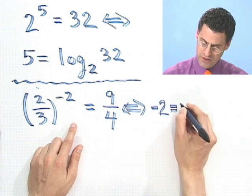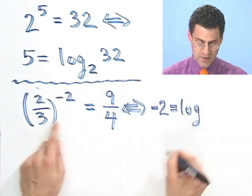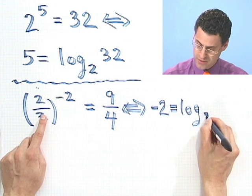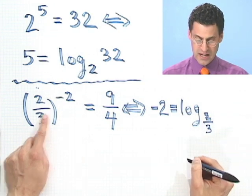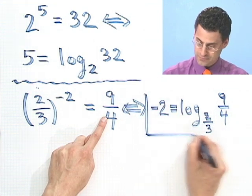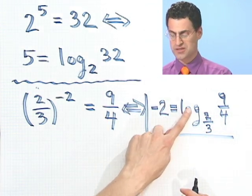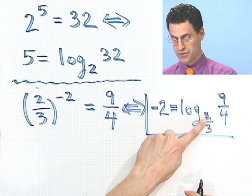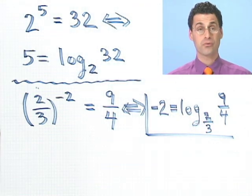So negative 2 equals the log, equals the exponent that I have to raise this base to 2 thirds in order to get 9 fourths. So the answer is negative 2 equals log base 2 thirds of 9 fourths.